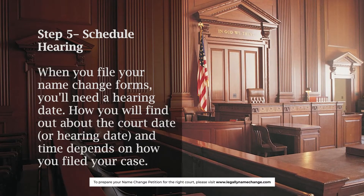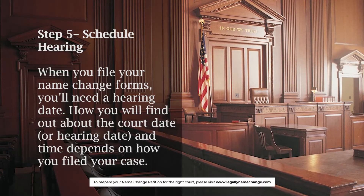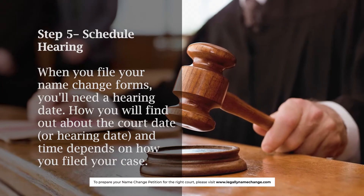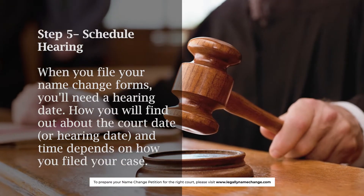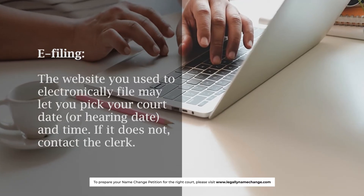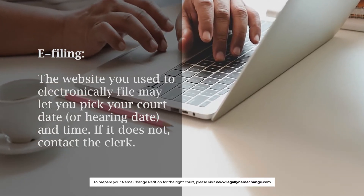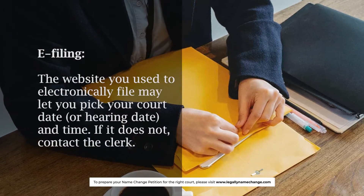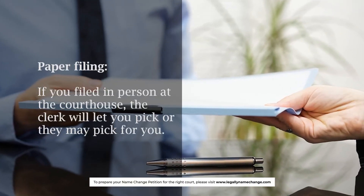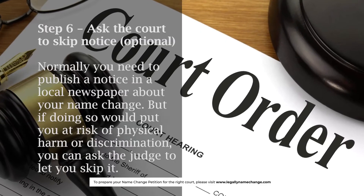Step 5: Schedule hearing. When you file your name change forms, you'll need a hearing date. How you find out about the court date and time depends on how you filed your case. E-filing: the website you use to electronically file may let you pick your court date and time; if it does not, contact the clerk. Paper filing: if you filed in person at the courthouse, the clerk will let you pick, or they may pick for you.